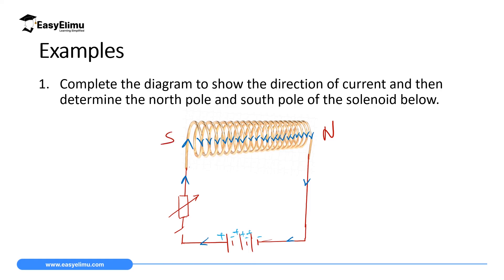We can also use the clock rule. If you observe from one end of the solenoid and the current in the last loop is moving in a clockwise direction, that end is the south pole. If you view the other end and the current is moving in an anticlockwise direction, that will be the north pole. You can use either Fleming's right-hand grip rule or the clock rule to determine the poles.